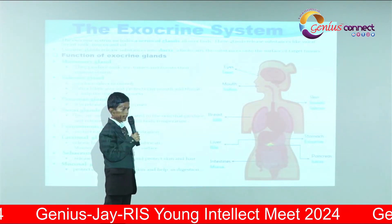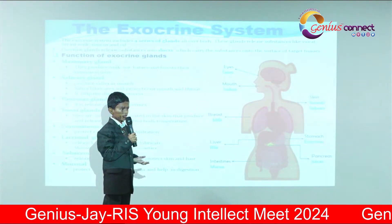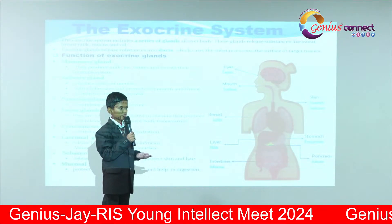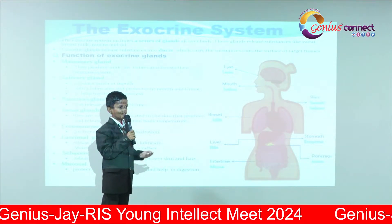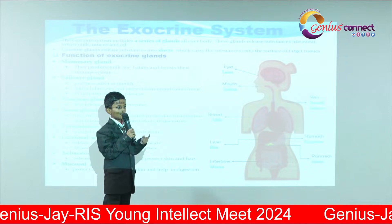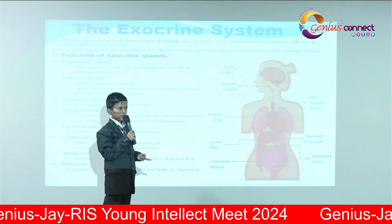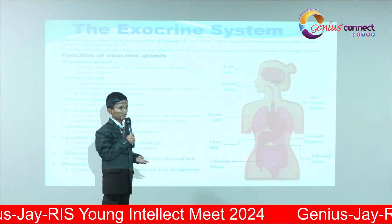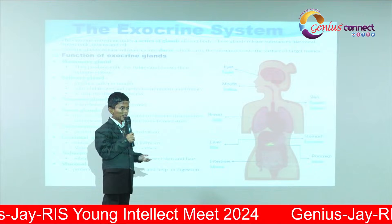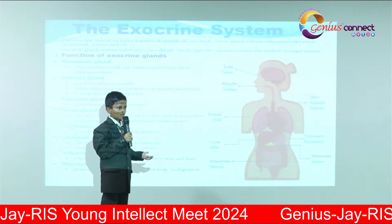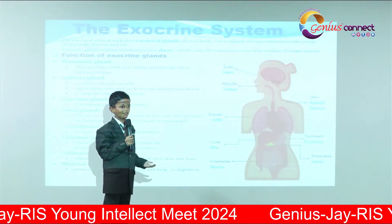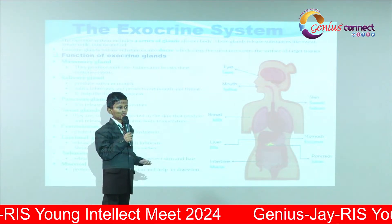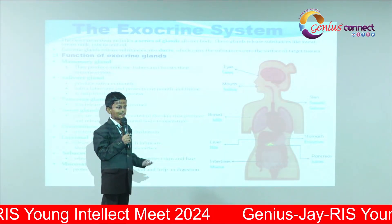The exocrine system is a series of glands that release substances such as sweat, bile, milk, mucus, and oil. The exocrine glands release these substances into ducts, and the ducts carry the substances onto the surface of target tissue.